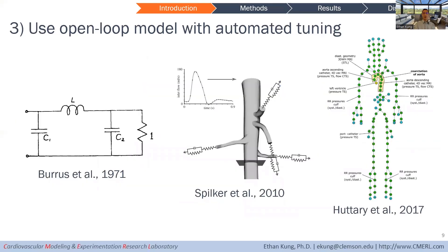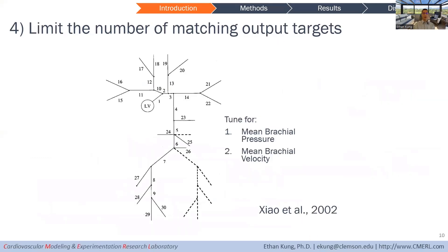Another approach uses open-loop models to narrow down the parameter search space, making it feasible to implement automated tuning with some kind of optimization process. Another approach is to limit the number of output targets you're trying to match, which also makes the tuning easier to automate.